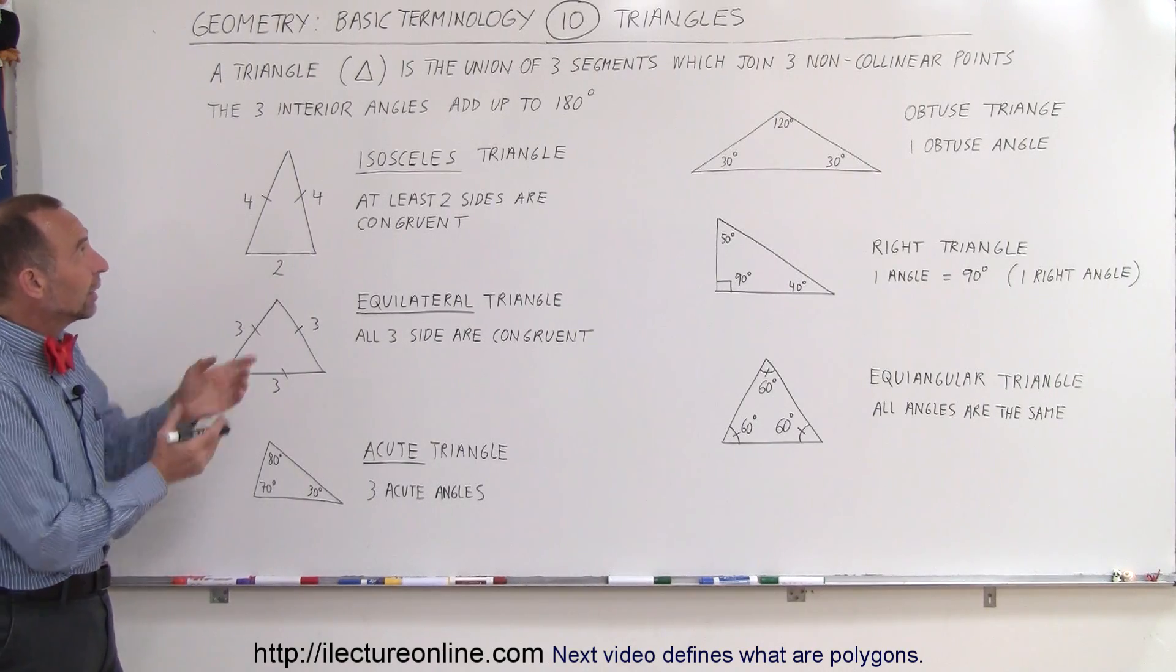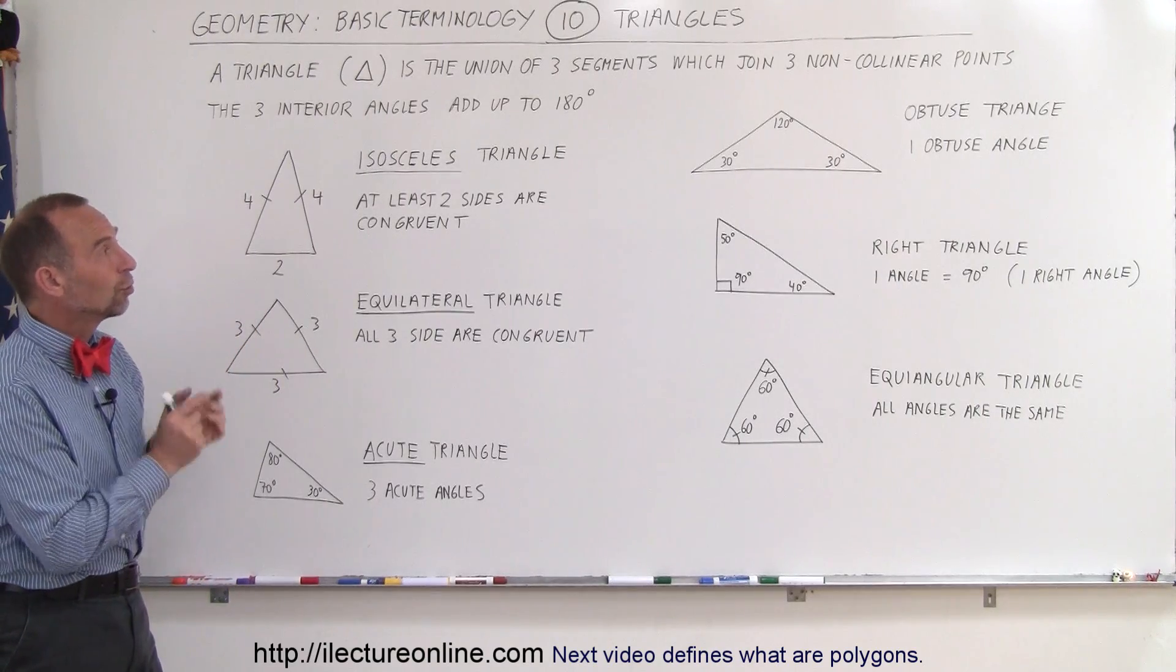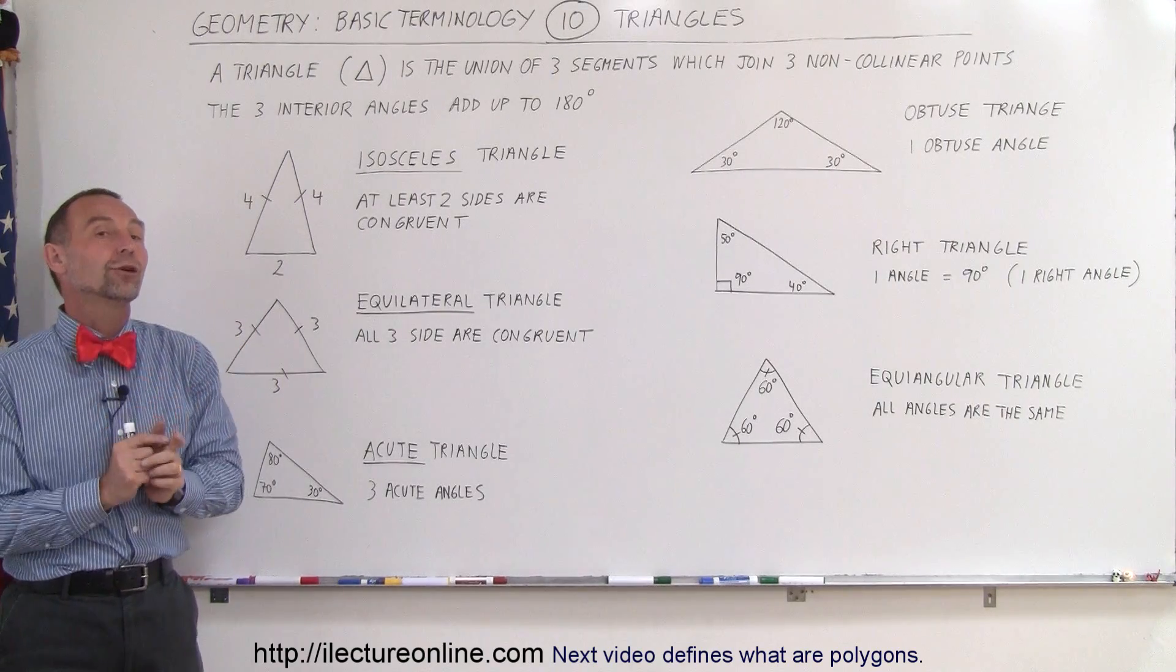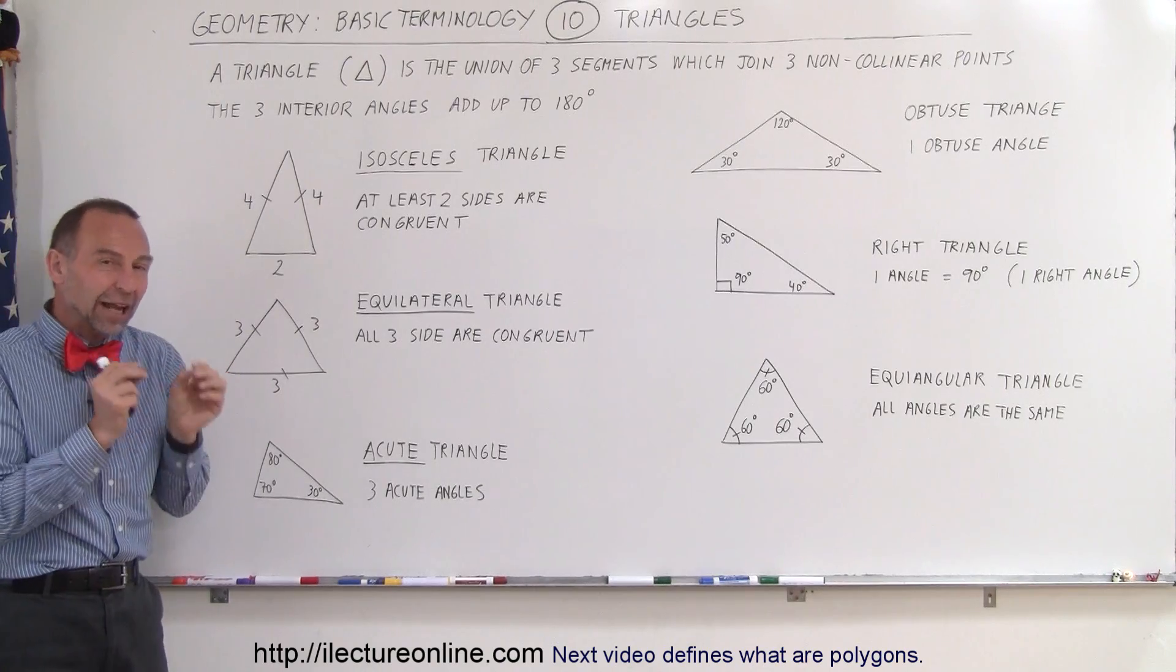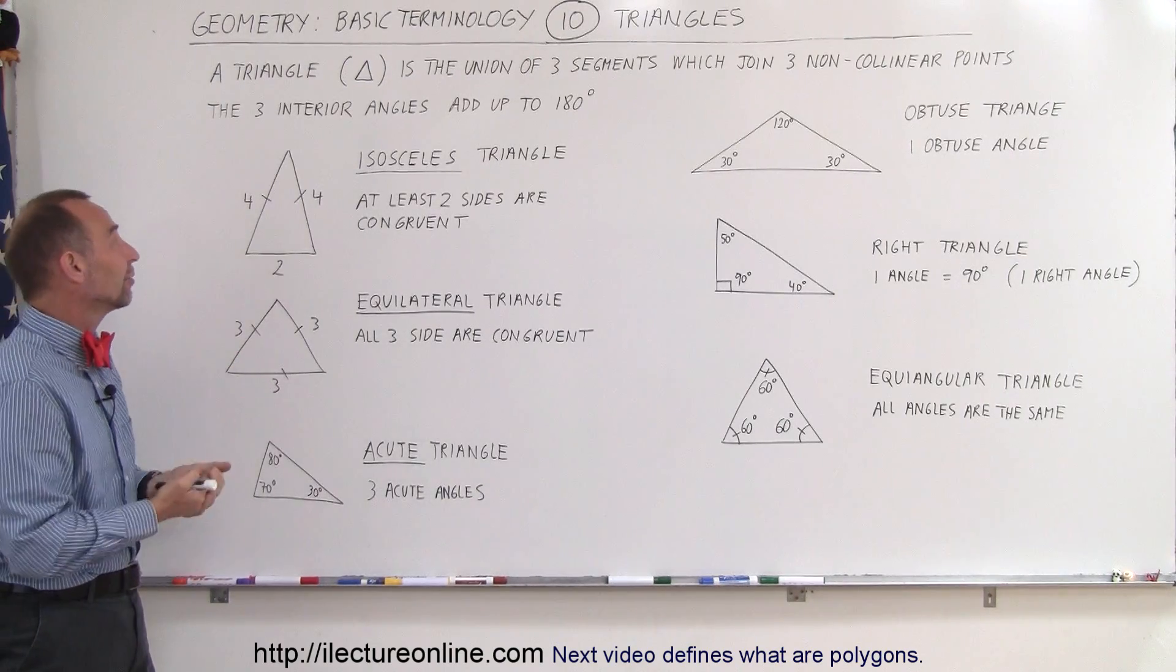First of all, a triangle, and that's a symbol for a triangle, is the union of three segments - three line segments which join three non-collinear points. You take three points that are not on the same line, you connect them with three line segments and you have yourself a triangle.